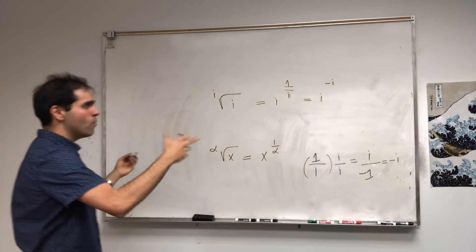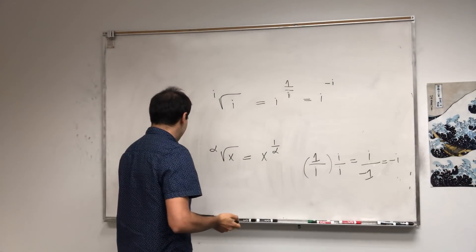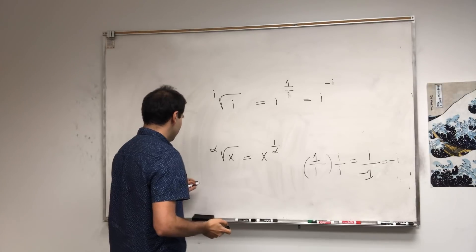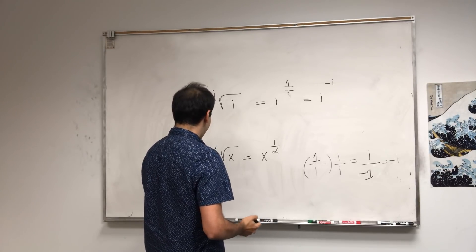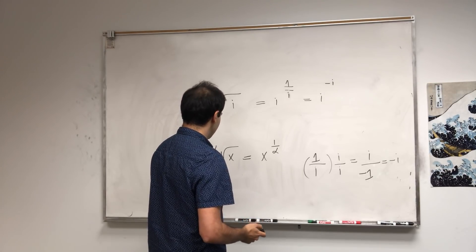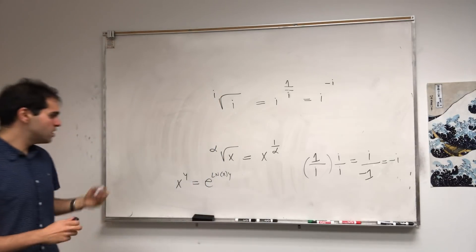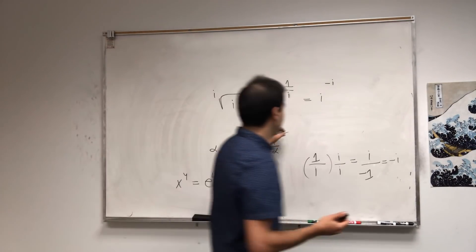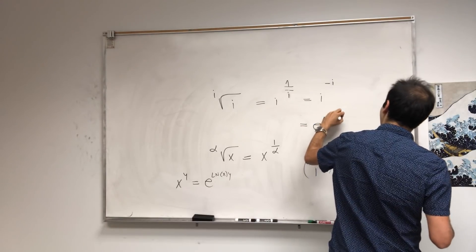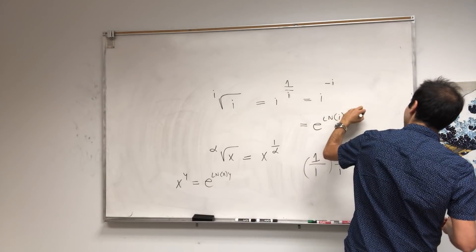Second of all, remember what x to the y is. Another way of writing this is e to the ln of x times y. So what this becomes, it becomes e to the ln of i times minus i.